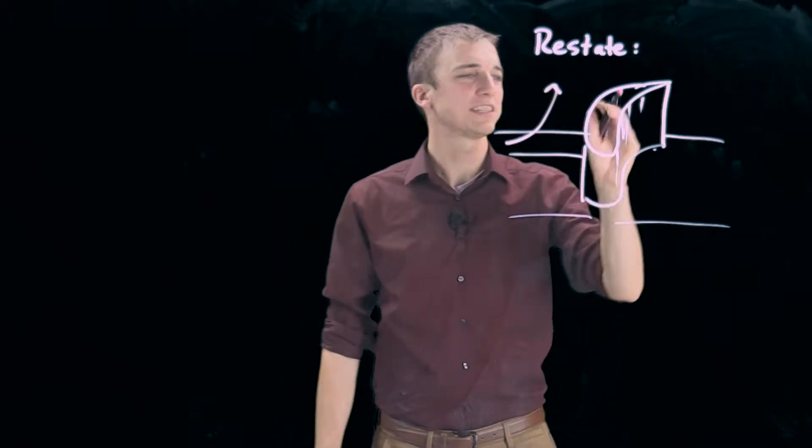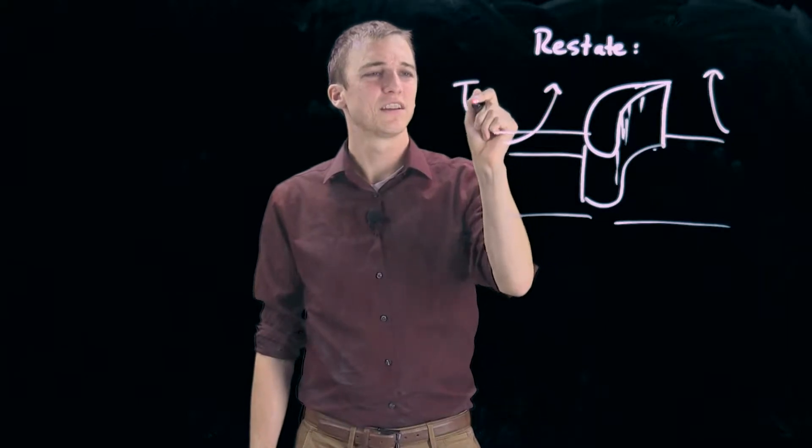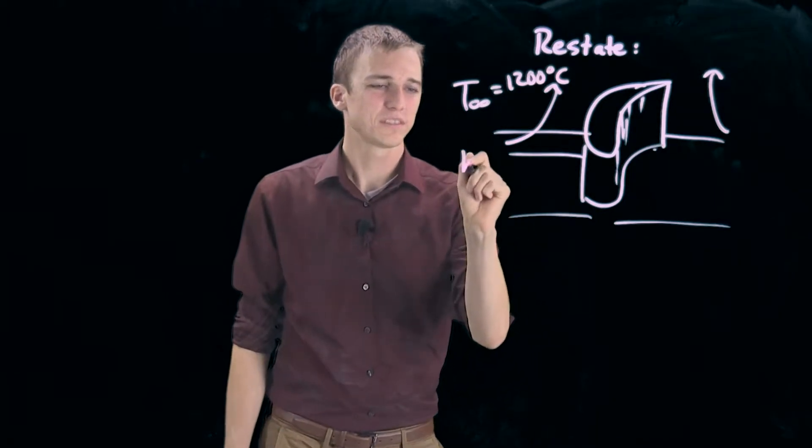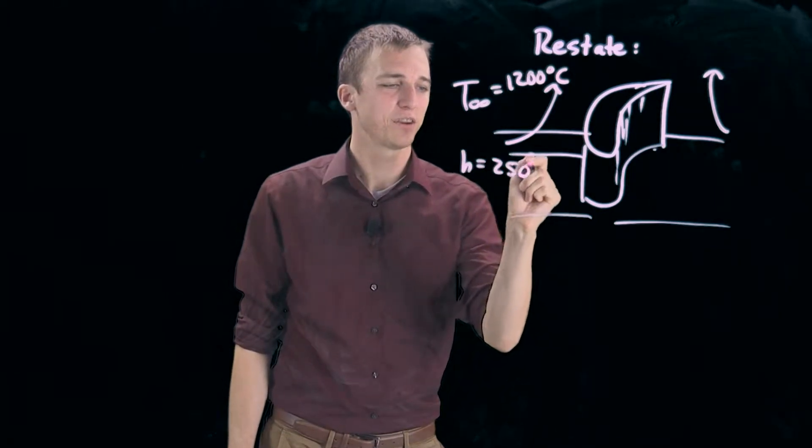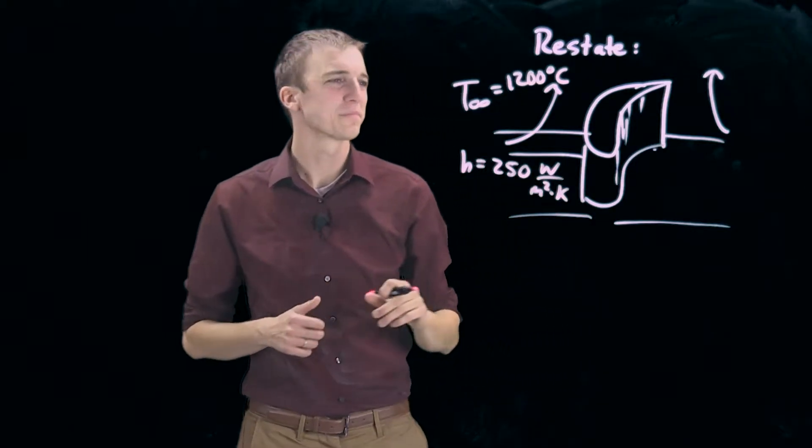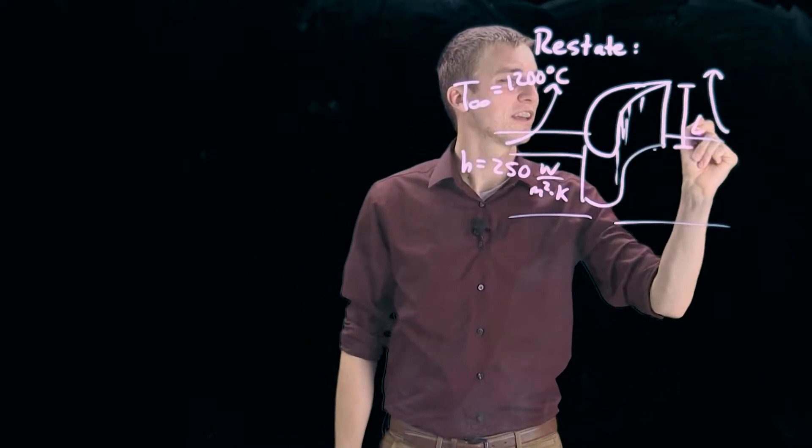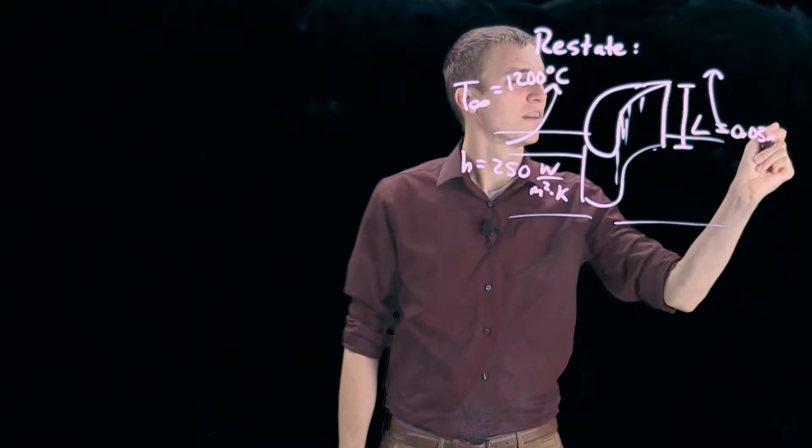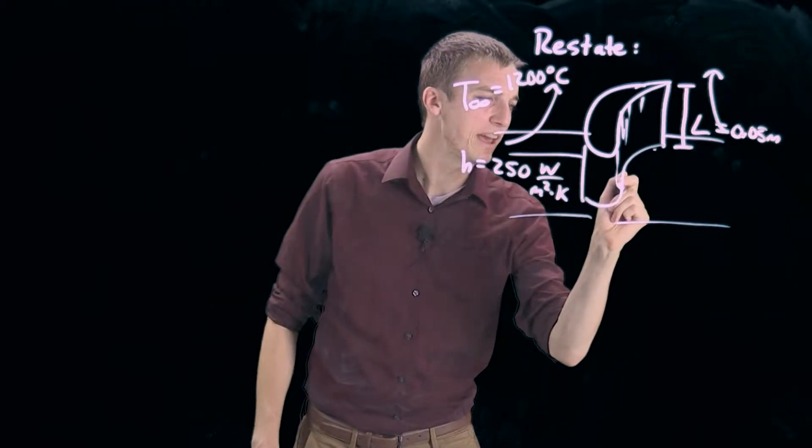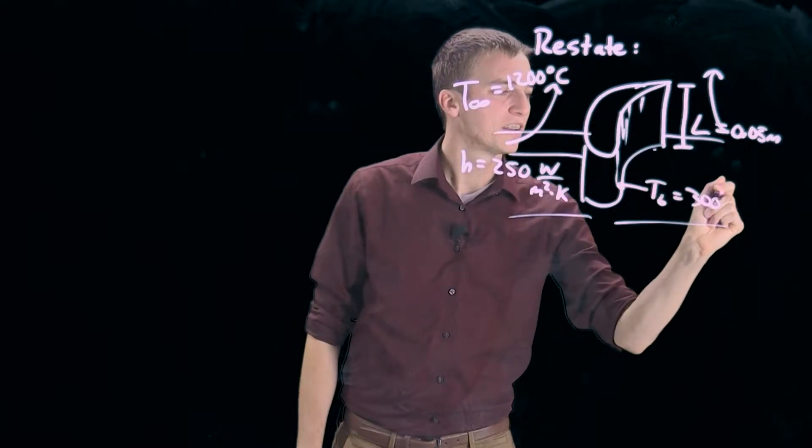Around this extended piece of metal is some very hot gas at T infinity of 1200 degrees Celsius, and it's moving fast so it has a very high convection coefficient of 250 watts per meter squared kelvin. This piece of metal is somewhat tall, it is 5 centimeters, 0.05 meters, and the base is at 300 degrees Celsius.